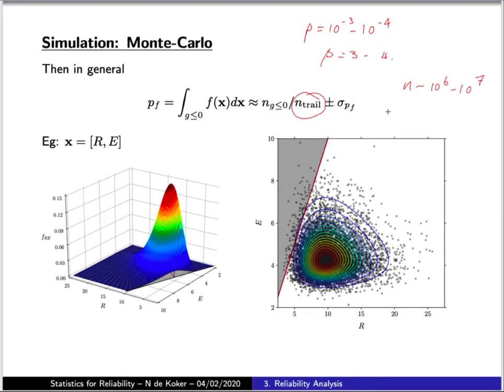This is particularly problematic if your determination of the performance function for a specific set of random parameters requires some numerical computation. Even if one instance took a second to compute, if you need 10 to the 7 of them, you're going to require a couple of months to get to that result. So this can be problematic.